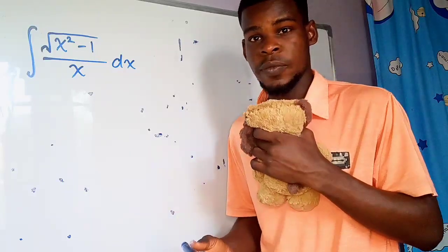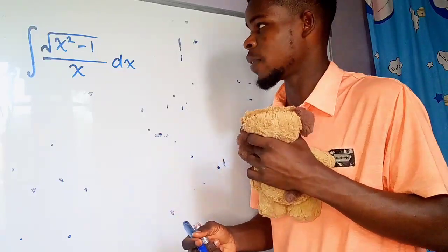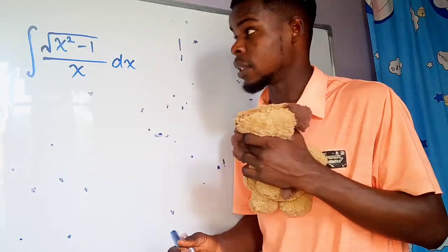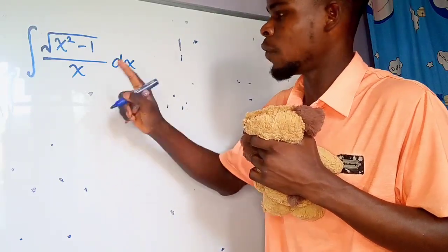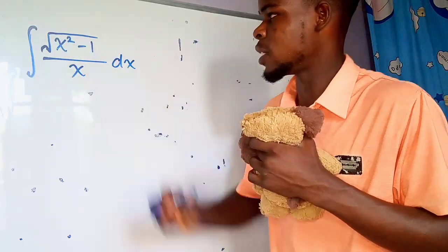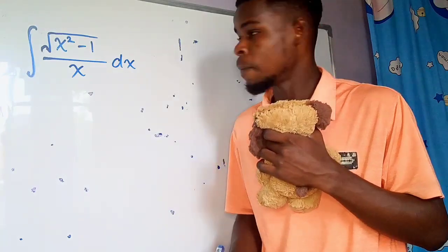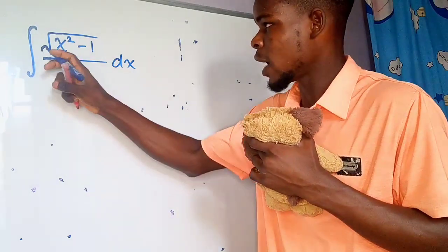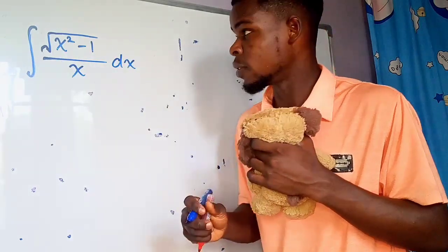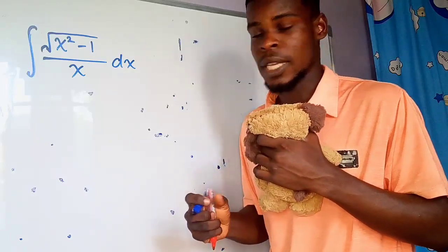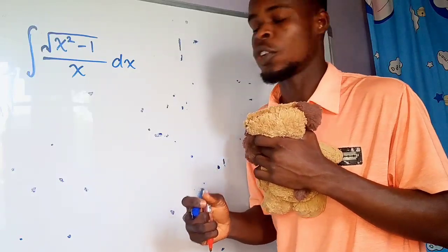We want to find the anti-derivative of this function. We have the function to be the square root of x squared minus 1 divided by x. I've noticed that in the numerator I have this term, the square root of x squared minus 1. Whenever I have a term like that appearing in an integrand, I like to make use of a trigonometric substitution.